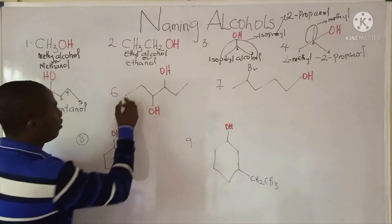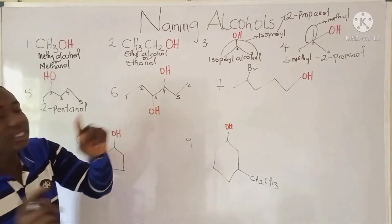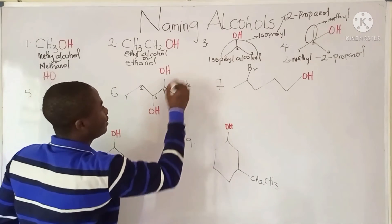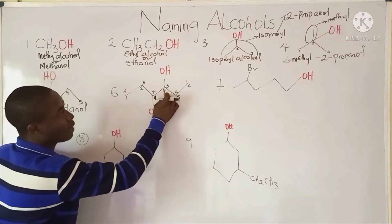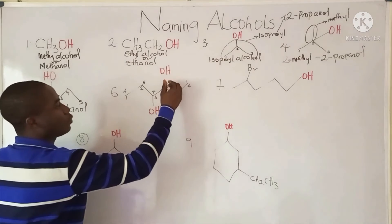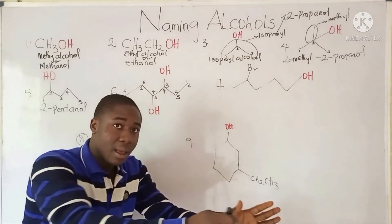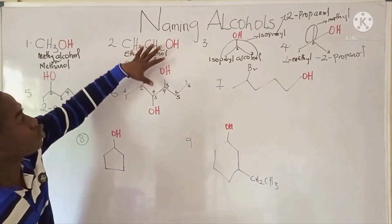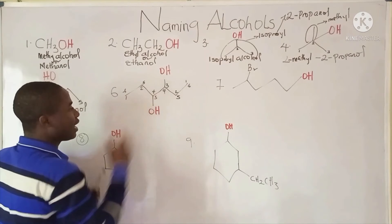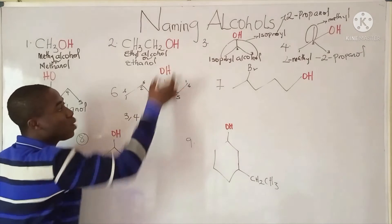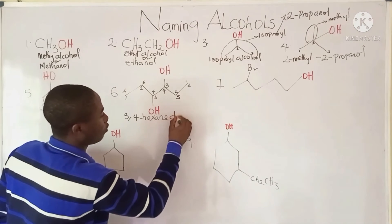Moving on to the next question. We number: carbon 1, 2, 3, 4, 5, and 6. Numbering from either direction gives the same result — at carbon 3 there is an OH group, and at carbon 4 there is another OH group. So you can number from both directions. It is a 6-carbon chain, so it will be called hexane. Since there are 2 OH groups in this compound, it is called a diol. To be specific, the positions are 3 and 4, making it 3,4-hexanediol.